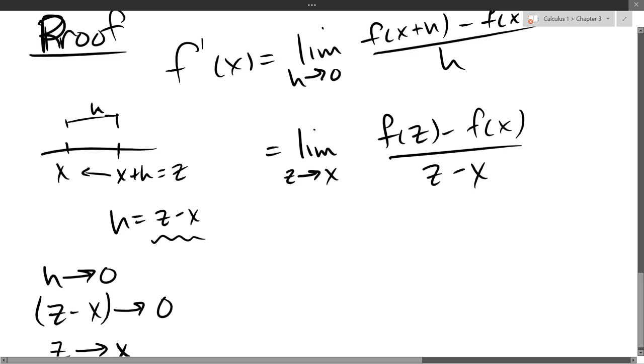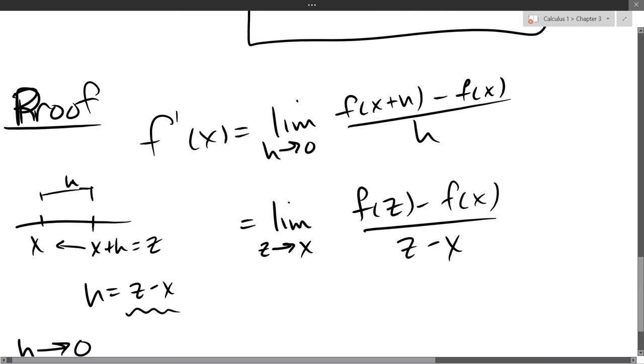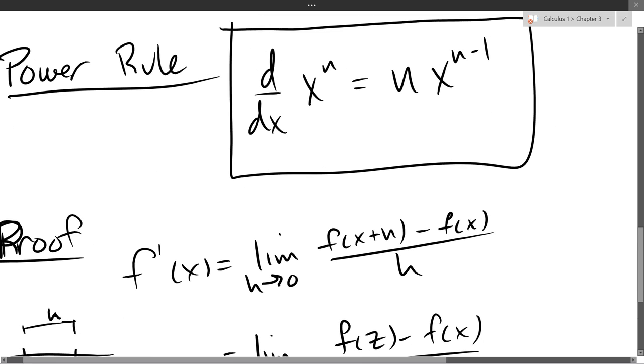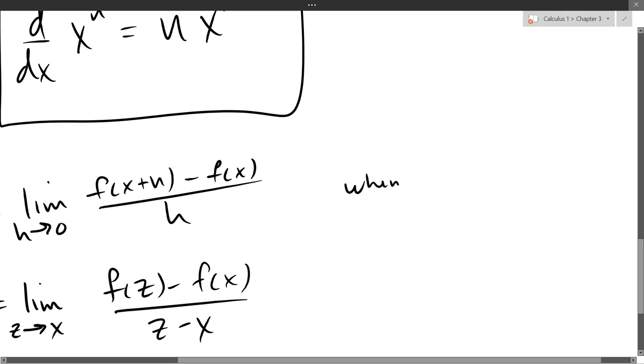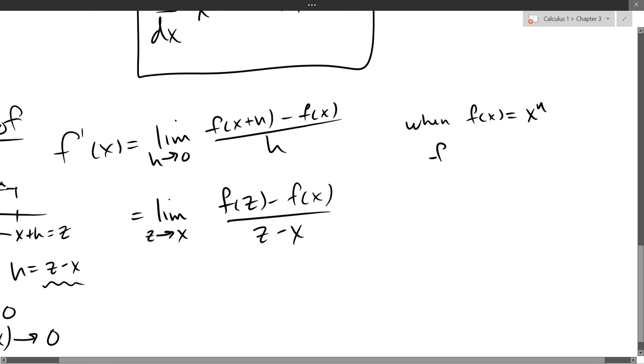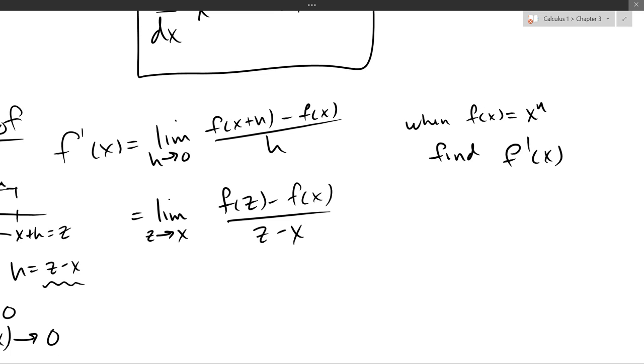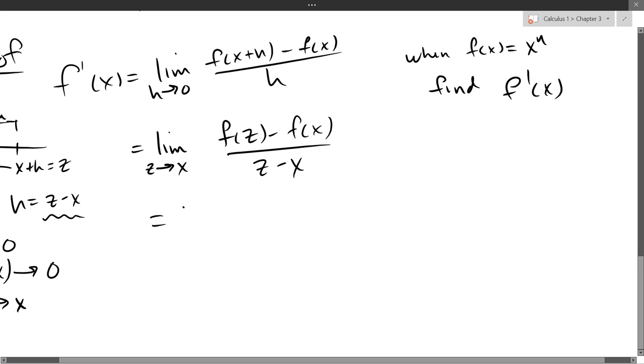So now we're going to find this limit. Alright, what function are we using? We're using somewhere f of x is x to the n. So I'm trying to find f prime of x. I told you what it is. But now we're going to have to actually show that it is what I told you it was. So f of z, that's really easy. That's z to the n minus f of x is x to the n over z minus x.